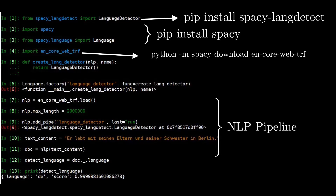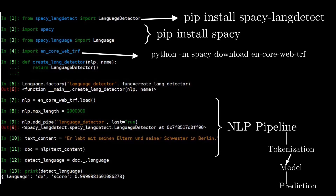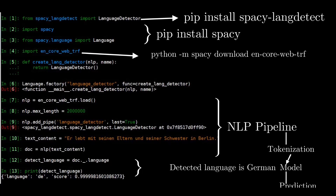The NLP pipeline consists of tokenization, which converts text into numbers and feeds it into the model. Here we have used the language_detector model to detect the language of the text. If you print the detect_language variable, you can see the detected language is German and the accuracy score is 0.99. Here we have used only single-language text, but what happens if another language text is added into the text_content variable?